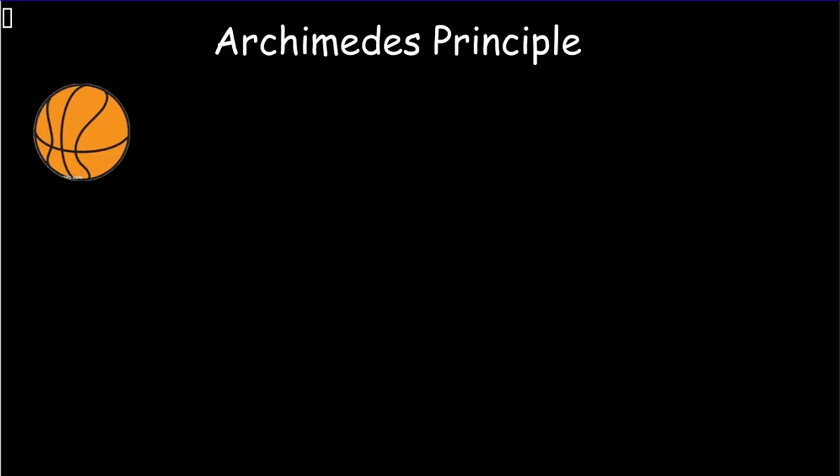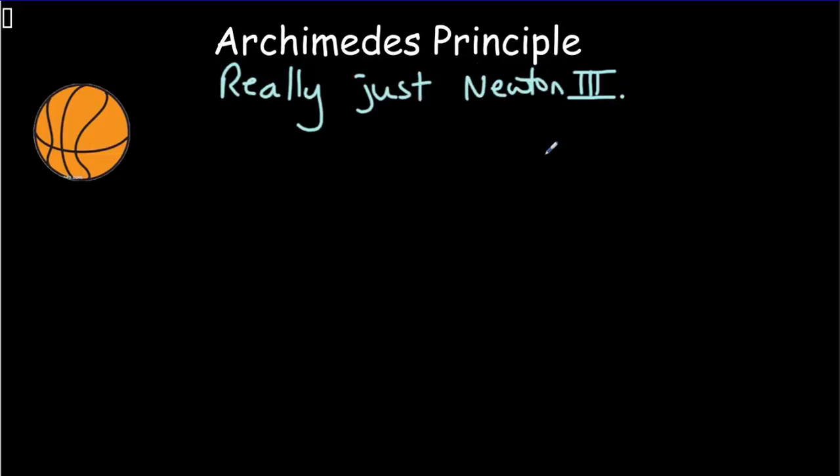For a simple cylinder it's easy to calculate the buoyant force directly. But most objects don't have simple shapes, so we use Archimedes' principle as a more general method. Archimedes' principle isn't really something new — it's really just Newton's third law: for every action, there's an equal and opposite reaction.